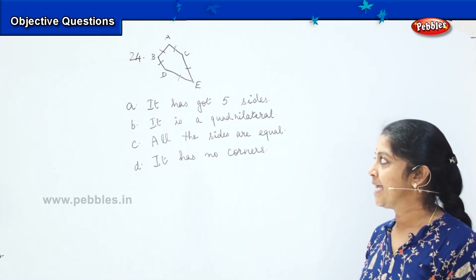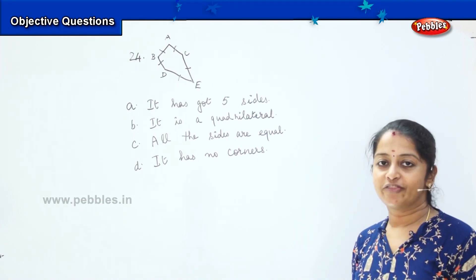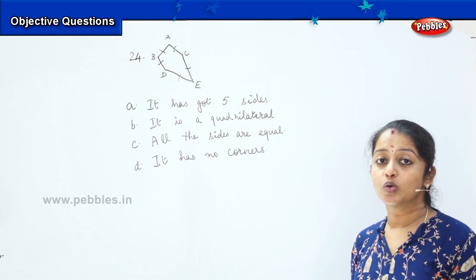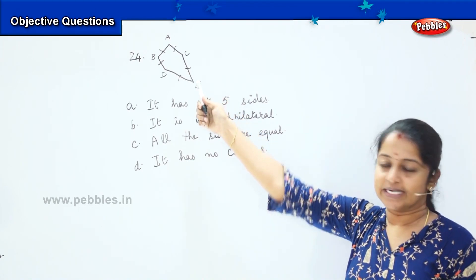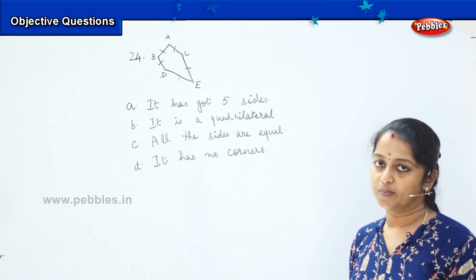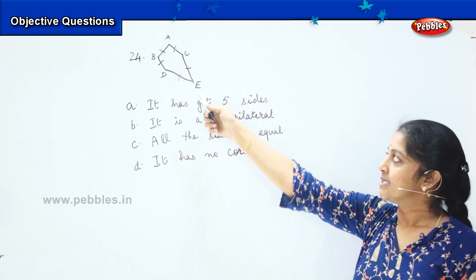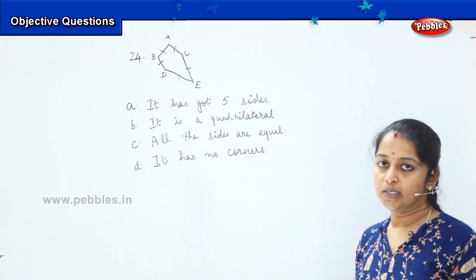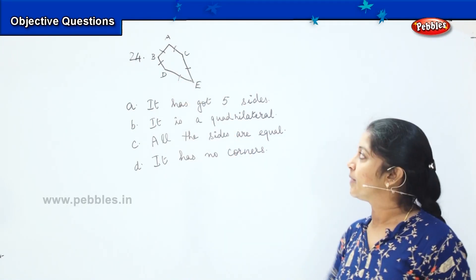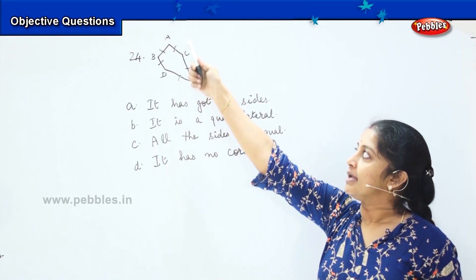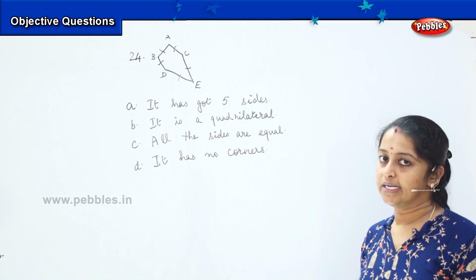The second one says it is a quadrilateral. A quadrilateral is a figure which has got four sides and one of the sides are equal. But here it has got five sides, so option B is not the right option. How about option C? All the sides are equal. See the figure and tell — are the sides equal? No, this figure is not the same. D, E, and C, A are not the same. So my third option is also not correct.